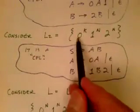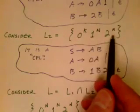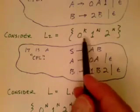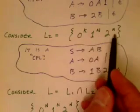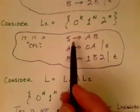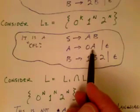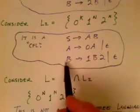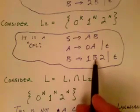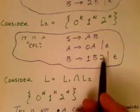The next language L2 is very similar: a bunch of zeros followed by a bunch of ones followed by a bunch of twos, but this time the number of ones equals the number of twos — 0^k 1^n 2^n. The grammar for L2 has S → AB, where A generates zero or more zeros using right recursion, and B → 1B2 | ε generates an equal number of ones and twos, with ones always to the left of twos.